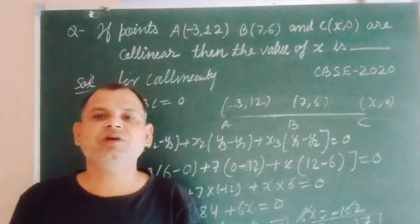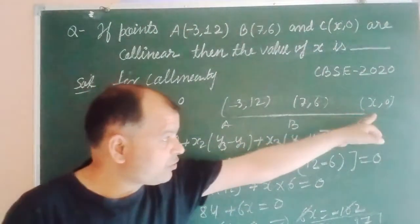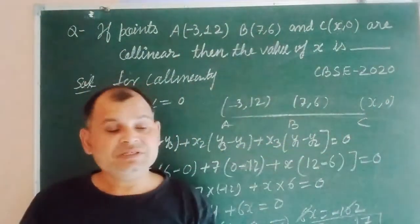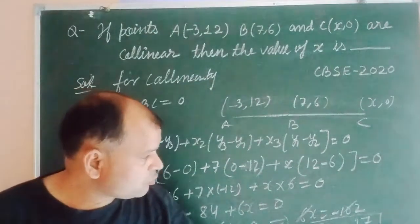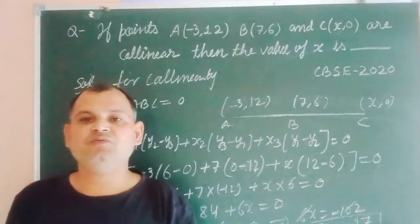So in this way, we got the value of unknown coordinate of point C, which is x equal to minus 17. I hope you got it. Thanks very much.